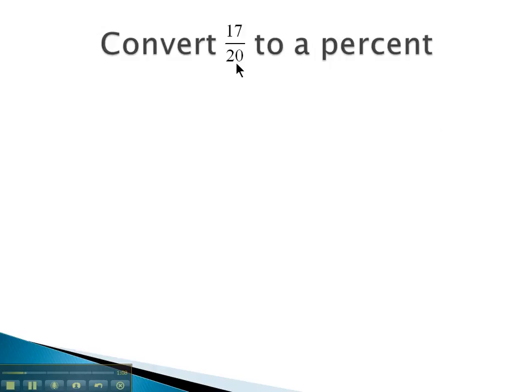What we're going to do to convert this to a percent is we're first going to divide, and our calculator makes the division really easy. 17 divided by 20. It's important that the numbers are in the correct order.